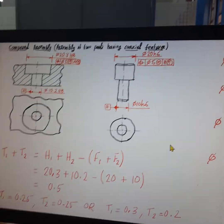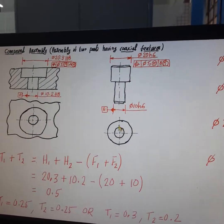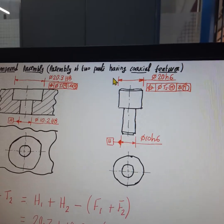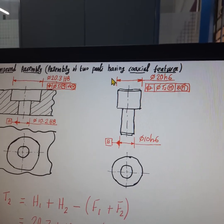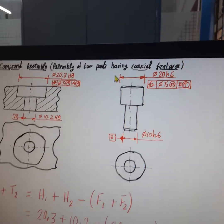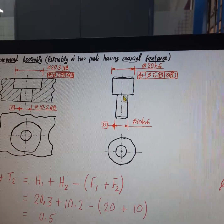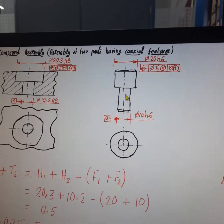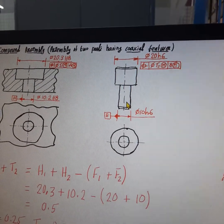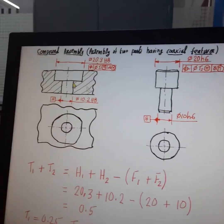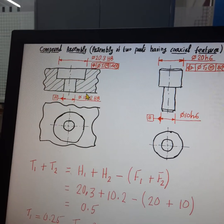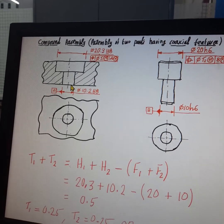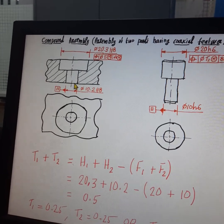So t1 and t2 should be allocated such that they satisfy the given equation. This is called compound assembly, or it can also be called the assembly of two parts having coaxial features. This member has coaxial features — one end is coaxial with the other. Similarly, the hole member has two bores where the bigger bore is coaxial with the smaller bore.